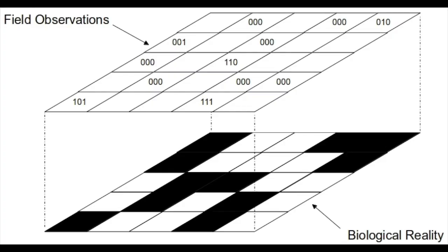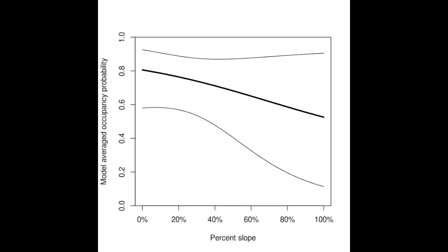With occupancy modeling you can try to obtain numerical estimates of, for example, what fraction of an area is occupied by a species, while accounting for the fact that you may have false absences. Or perhaps you want to look at the effect of different covariates on either occupancy rates or detection rates. One of the key things about occupancy modeling is that it can account for situations where detection may be related to the same types of covariates as your occupancy probability — and if you don't account for detection in those situations, that can really give you misleading inferences if you just use standard approaches like logistic regression.